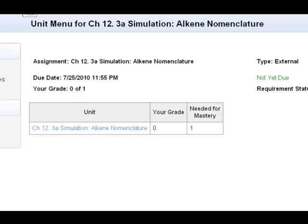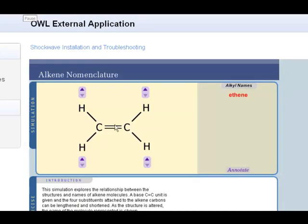I'm going to use the simulation in ALO12-3 to show you some examples of cis-trans alkenes. Here we start off with a very simple alkene. It's called ethene. Two carbons with a double bond.